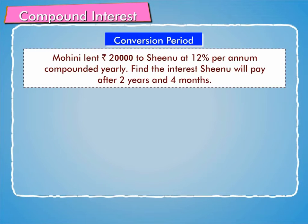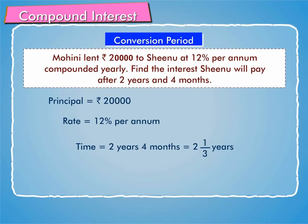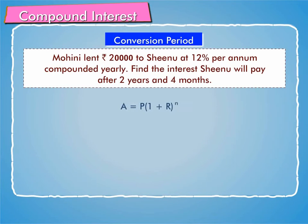Mohini lent Rs. 20,000 to Shinu at 12% per annum compounded yearly. Find the interest Shinu will pay after two years and four months. Here, principal is equal to Rs. 20,000, rate is equal to 12% per annum, and time is equal to 2 years 4 months, which equals 2 and 1/3 years.